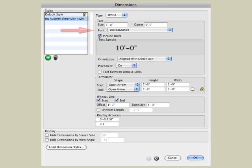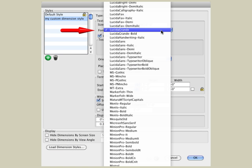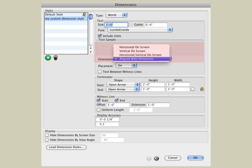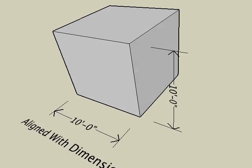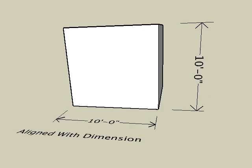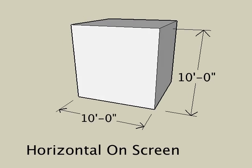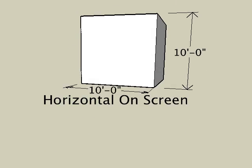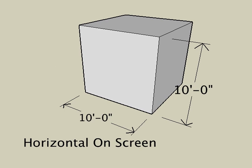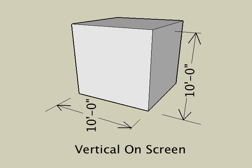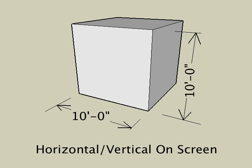The text font for your dimension style can be set to any font available in your operating system. The orientation option determines how text is displayed on the screen. The default option, which is the Aligned with Dimension option, displays the text in the plane of the dimension. If you change the option to be horizontal on screen, then the text is displayed flat on the screen regardless of your viewing angle. Other orientation options include vertical on screen or horizontal and vertical on screen.